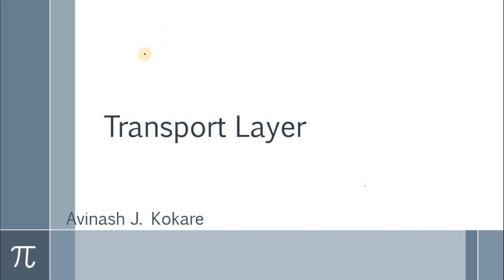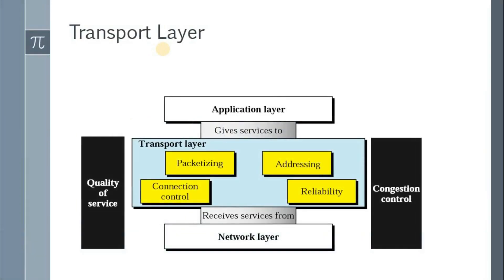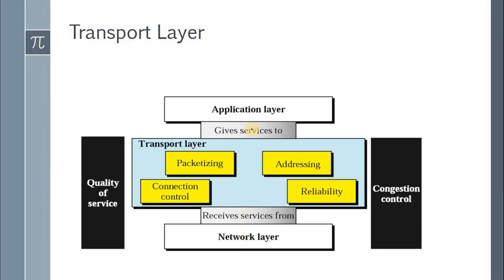Welcome to this tutorial on computer networks. We are going to study the transport layer, which is placed between the application layer and the network layer. The transport layer's main function is to receive services from the network layer — that is, from the IP protocol — and to provide services to the application layer. Its basic functionalities include congestion control, quality of service in terms of reliability, connection control, packetizing, and addressing.